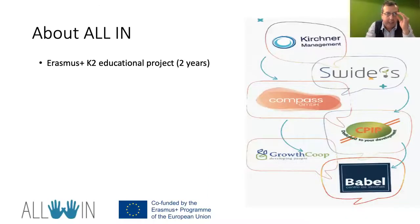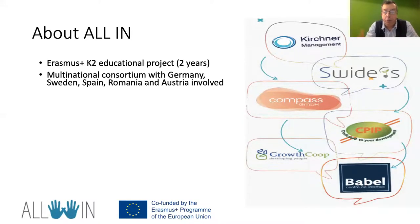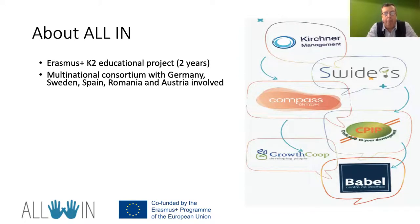Let me explain ALL IN as a concept. It's an Erasmus project — a so-called K2 educational project funded by the European Union over two years. These kinds of projects, which are still ongoing and perhaps interesting for your institution, are multinational consortium type projects. In this project, we had six partners from Germany, Sweden, two from Spain, one from Romania, and one from Austria.